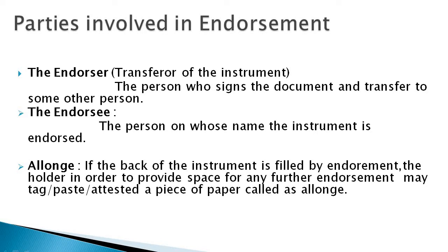The legal term used in the banking sector is Allonge. If the back of the instrument is filled by endorsements, the holder, in order to provide space for any further endorsement, may tag, paste, or attach a piece of paper called Allonge. Allonge is a paper attached to an instrument to provide space for additional endorsements. If there is no space available in the instrument, this paper can be attached to the original instrument for additional endorsement.